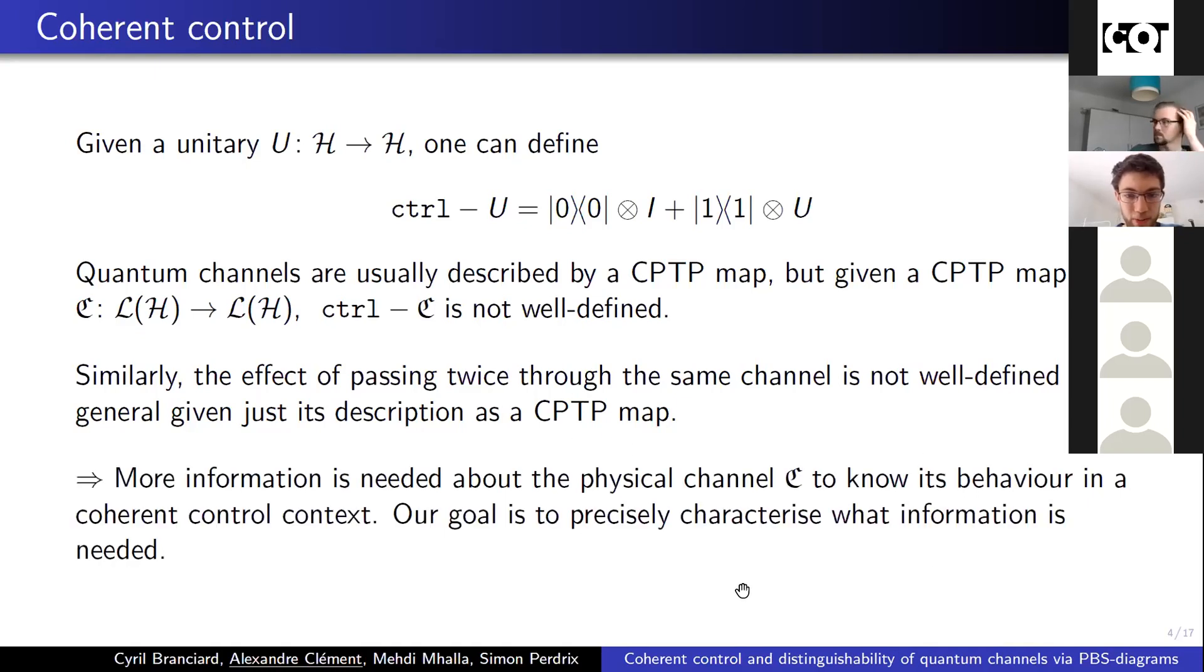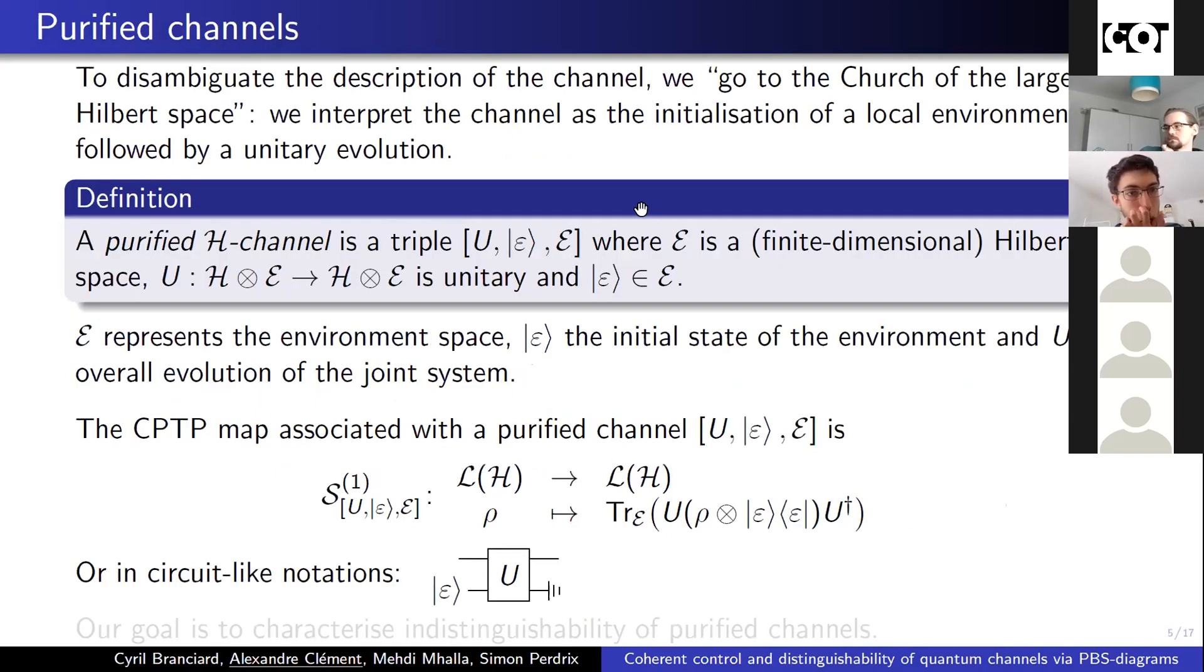So we need more information, we want to characterize it. For this purpose, we describe the channels as unitary evolutions on a joint space with an environment. Any physical channel can be described as this. And this contains any information needed about the implementation. This corresponds to Stinespring dilation, where the isometry is transformed into unitary with some initialization. But now I will have too much information. There are many such descriptions that are equivalent.